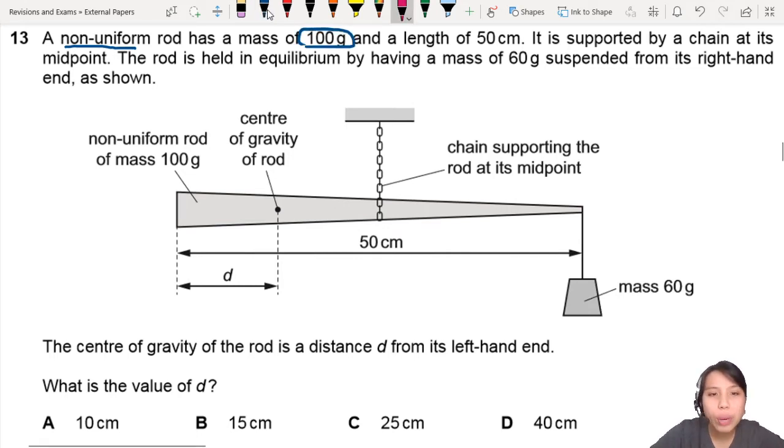Where's the mass? Where's the weight of the rod? You would usually say it acts on the center of gravity of the rod. So this would be the weight. Keep that in mind. 0.1 kg times 9.81.